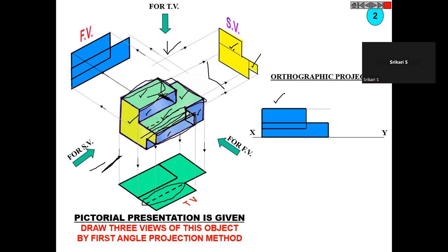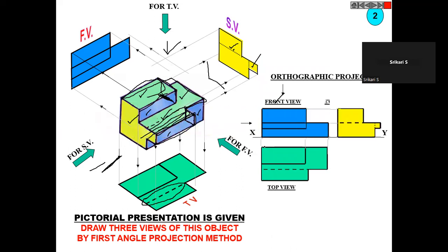You have to draw the front view, then the top view, then the side view. The top view always should be below the front view, and the side view should be to the side of the front view. If the side view is seen from the right side, you draw it on the left side; if seen from the left side, you draw it on the right side. You observe from one side and draw on the corresponding side.